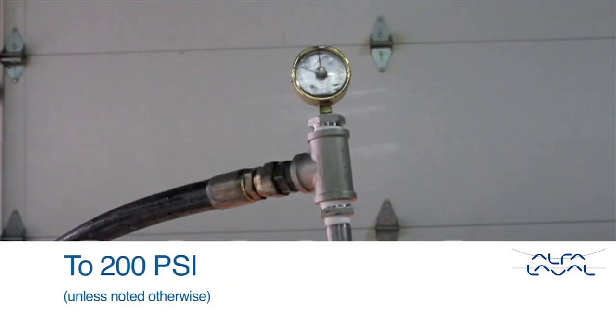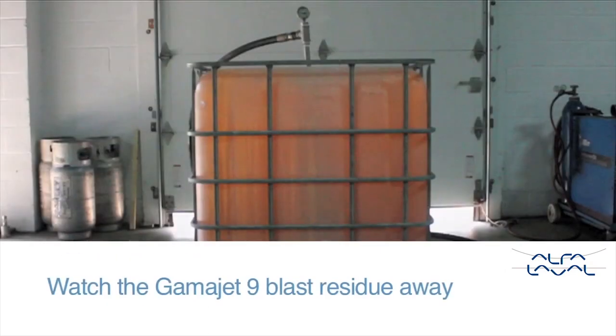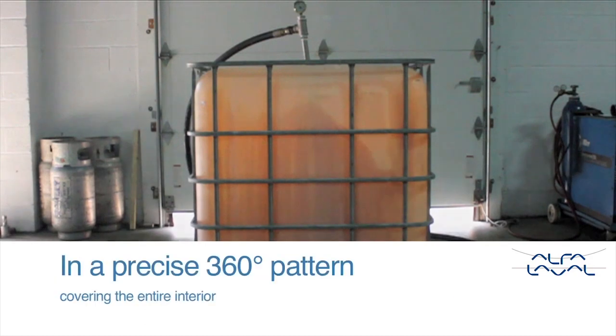Once the pump is turned on, the GammaJet 9 will start blasting away residues inside the tote in a controlled 360 degree repeatable pattern covering the entire interior of the tote.